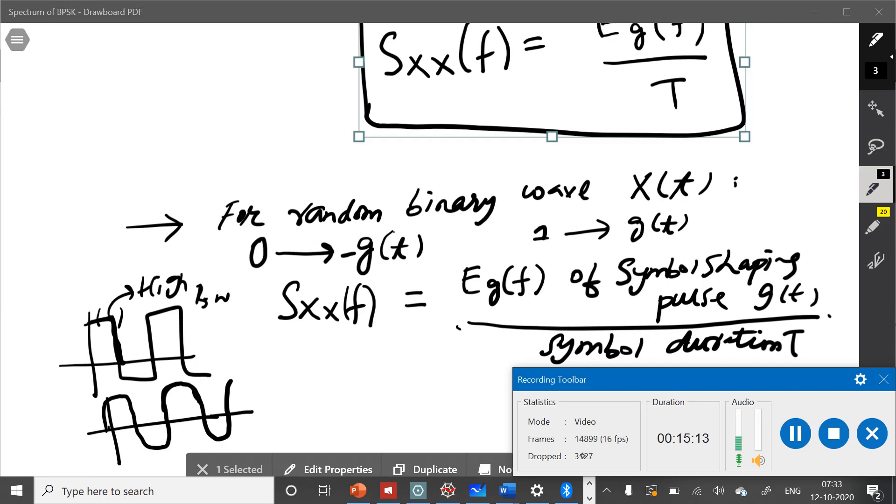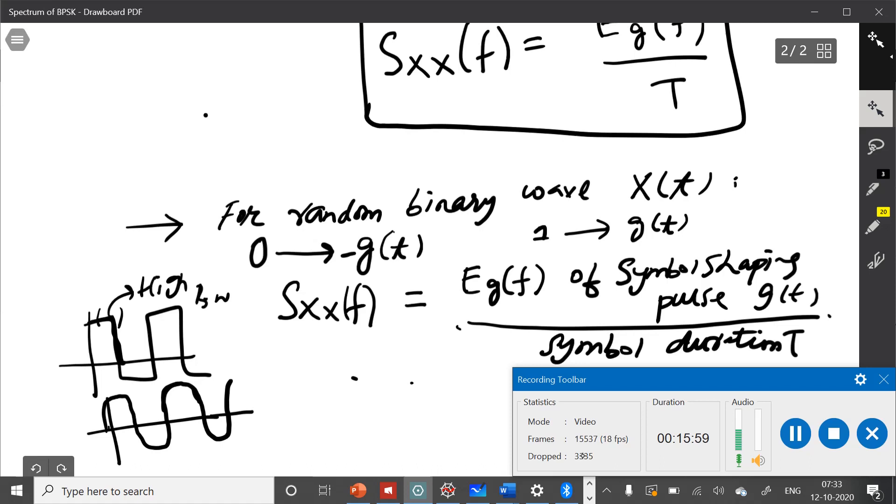So in next lecture, which is part of this lecture itself, we will not now derive too much things. Now we will use these insights. So insight is, for random binary wave, if it is rectangular pulse, the power spectral density has sinc square behavior. Now you see BPSK, QPSK, QAM, they are all finally their baseband representation is a rectangular pulse, random binary waves. We will see in all those modulation schemes, sinc square will be the dominant thing. Then we also generalize it, in general, power spectral density depends upon the energy spectral density of any pulse shaping.